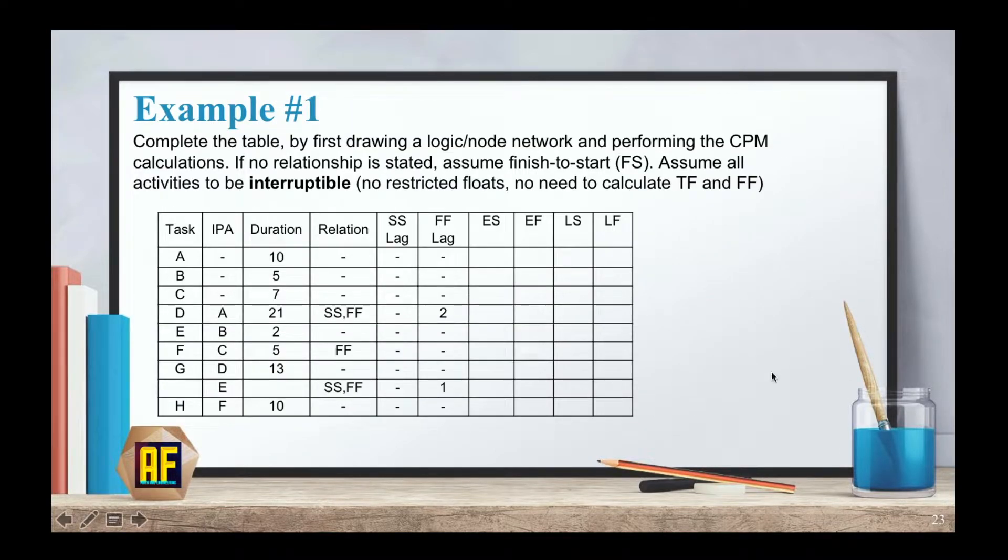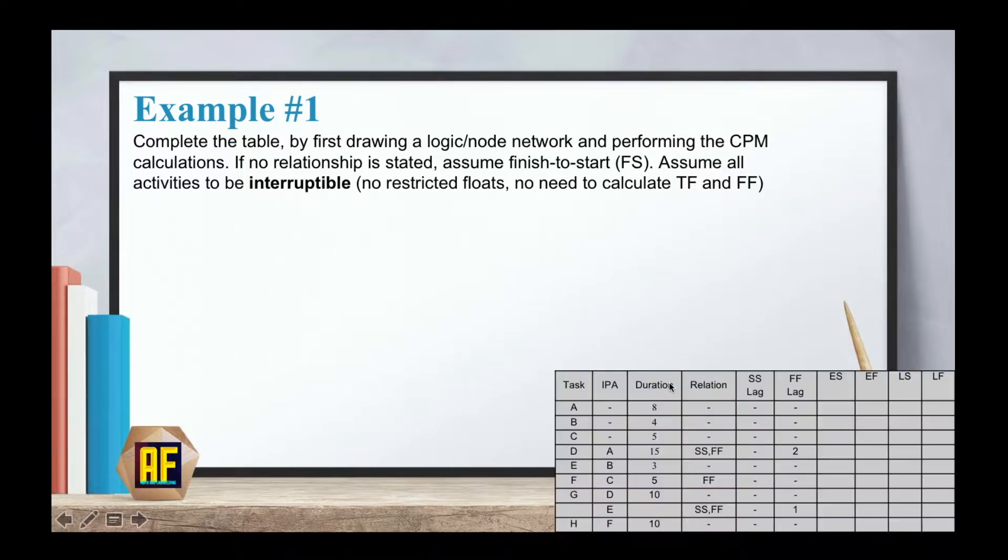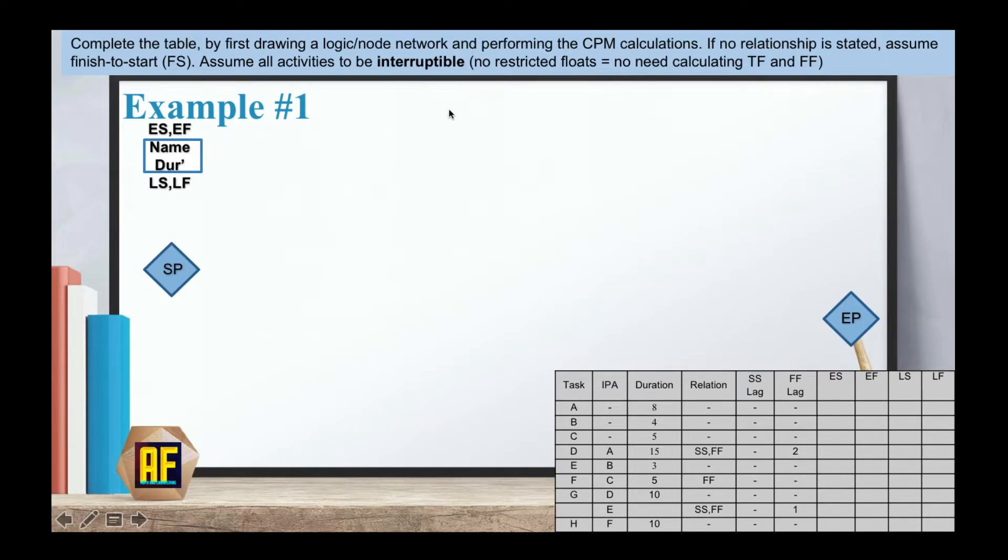As always, now we have our first example that will make everything clear. We have a table we need to complete by drawing a logic or node network and performing the CPM calculation, which is what we did in the previous videos. If no relationship is stated, assume finish to start. Assume all activities to be interruptible, which means there are no restricted floats. We have the table with tasks, the IPA, the duration, and here is the relationship. Let's take our table to the right so we'll have more space to work here.